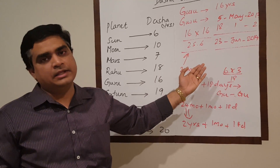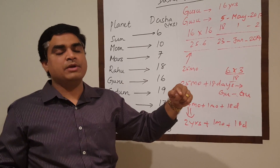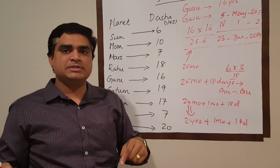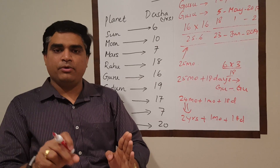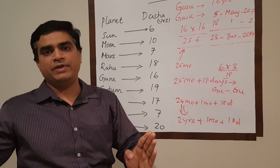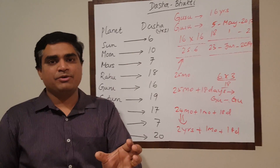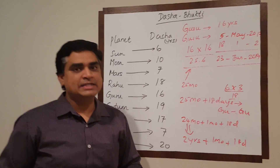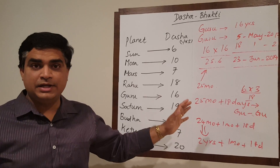After that comes Guru Dasha Shani Bhukti. You can extrapolate the same calculation: 16 is the number of Dasha years for Guru, and 19 is the number of Dasha years for Shani. Multiply 16 times 19, get the result, push two decimal places, place a decimal point — whatever is to the right of the decimal, multiply by 3 to get the number of days; whatever is to the left is the number of months. It's that simple.